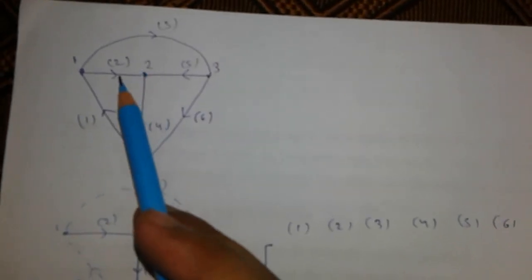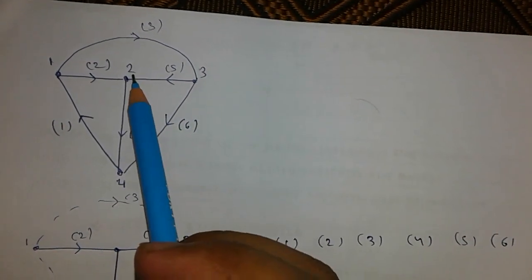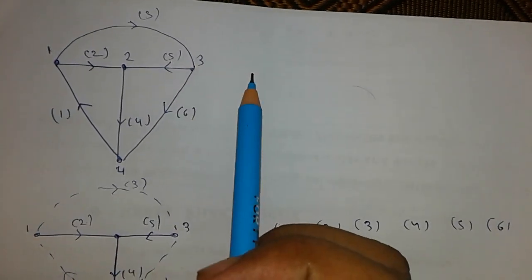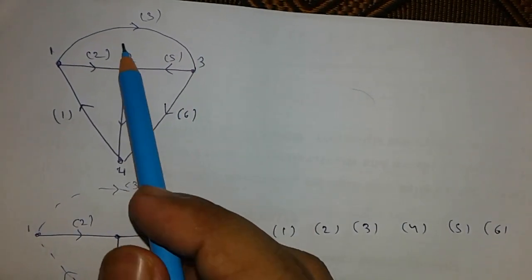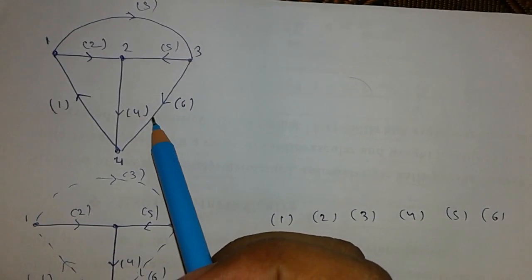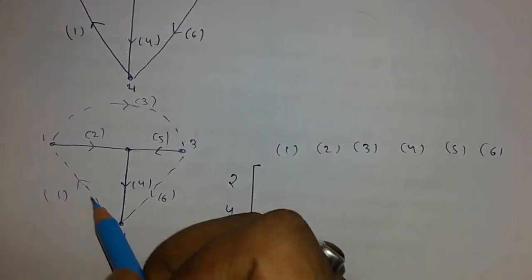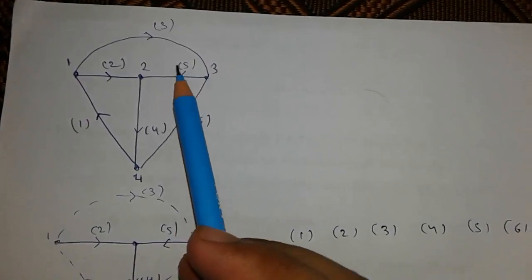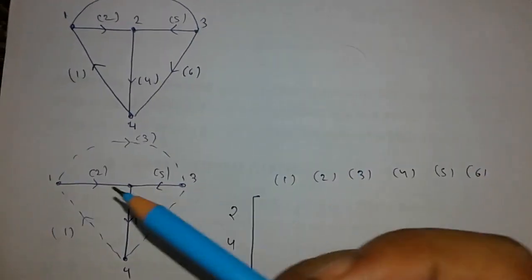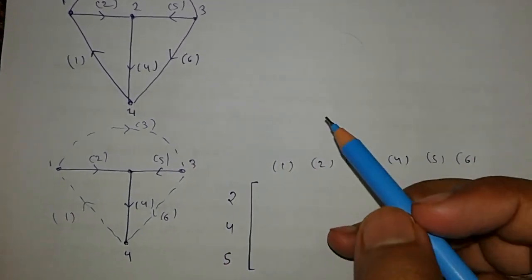We are going to find the cut set matrix. A graph is given and you have to consider a tree. Then you combine the effects of all edges which are not taken in that tree all at once. I have taken this T-shape as a tree and joined all the remaining edges as dotted lines. In the tie-set matrix we consider the effect of remaining edges one by one, but here you have to consider all effects together.